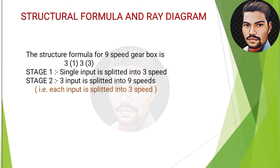The fourth step is the structural formula and ray diagram. For 9 speeds, we find the smallest factors: 9 = 3 × 3. The factors arranged in descending order are 3 and 3. The first factor is multiplied by 1 to give the first bracket, and subsequent products fill the next brackets: 3(1) × 3(3). So the structural formula for 9 speeds is 3(1) × 3(3).